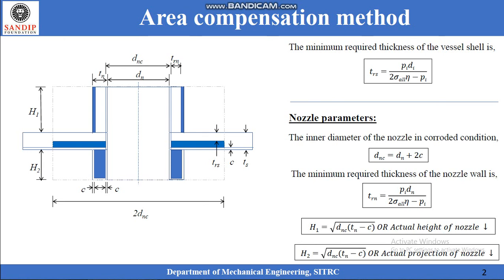Openings are created in the pressure vessel by removing some material from the shell of the vessel. This leads to loss of area which may weaken the pressure vessel. The loss in area has to be compensated by the excess area available either in the shell of the vessel or in the nozzle. When thickness of shell and nozzles are calculated, we get a fractional value. These fractions are rounded off to the next integer value since standard plates are available with specified thicknesses. Thus, excess thickness — and therefore excess area — is always available in the shell as well as in the nozzle. This excess area should compensate the loss of area due to removal of material.